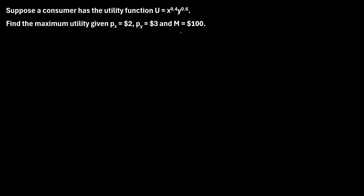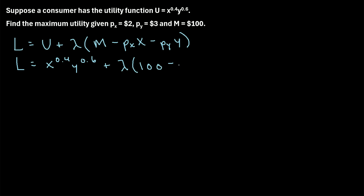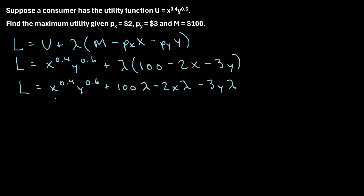One way to solve this is by using the Lagrange method. The first step is we have to write something known as the Lagrangian, which I'll abbreviate as L. This takes the following form: L = u plus lambda times (m minus the price of good x times quantity of x minus the price of good y times quantity of y). For this example, that gives us x^0.4 times y^0.6 plus lambda times (100 minus 2x minus 3y). We can distribute lambda into the parentheses to get our full Lagrangian.